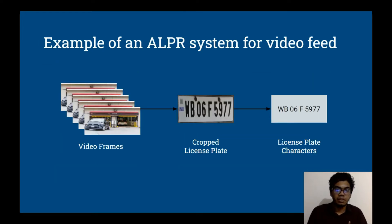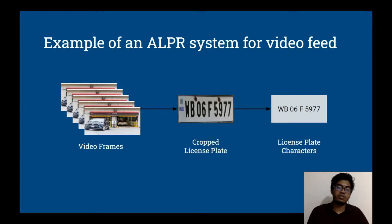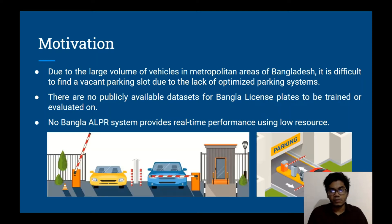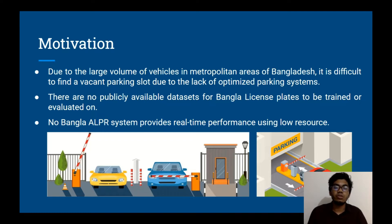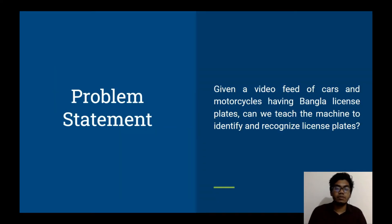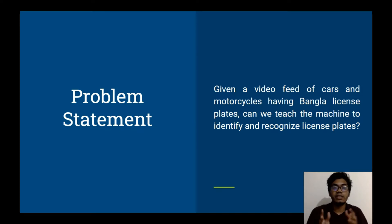Here is an example of an ALPR system for video feed. For input, we have video frames, and from there the ALPR system will crop out the license plate and finally give us a string as output. For Bangla's perspective, there are a large volume of vehicles in metropolitan areas of Bangladesh, making it difficult to find vacant parking spots due to the lack of optimized parking systems. Our problem statement is: given a video feed of cars, motorcycles, and other vehicles having Bangla license plates, can we teach a machine to identify and recognize license plates?